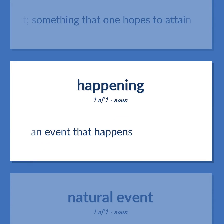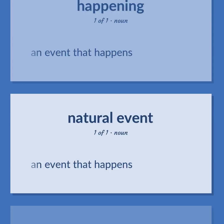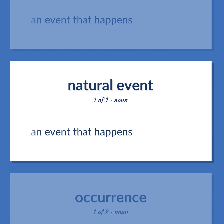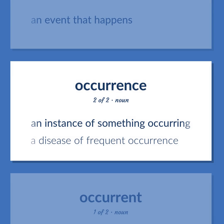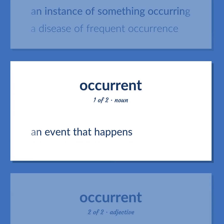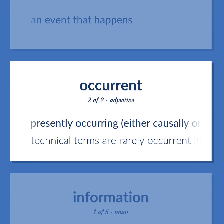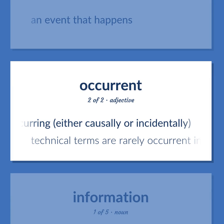Occurrence: an event that happens. An instance of something occurring — 'A disease of frequent occurrence.' Presently occurring, either causally or incidentally — 'Technical terms are rarely occurring in literature.'